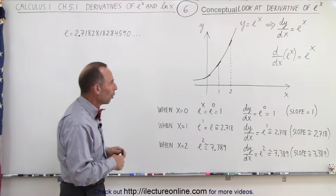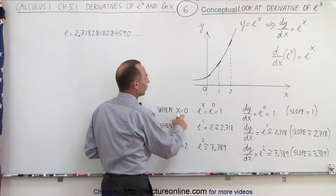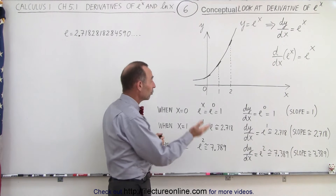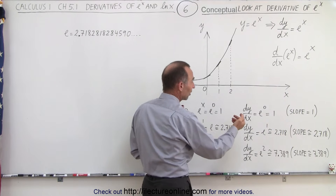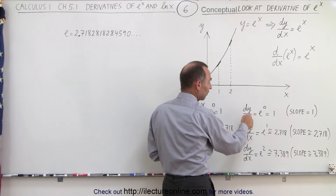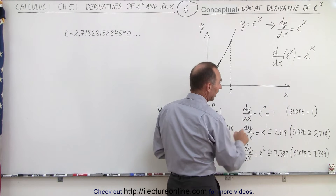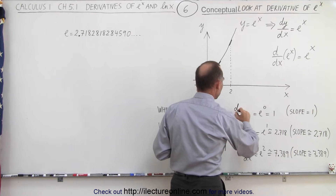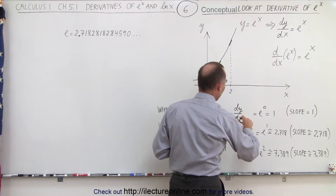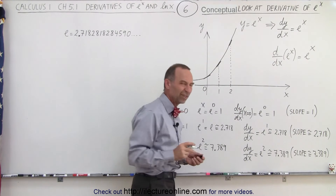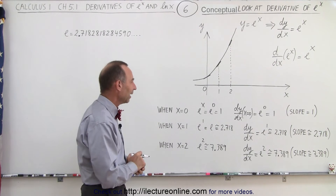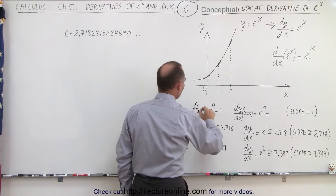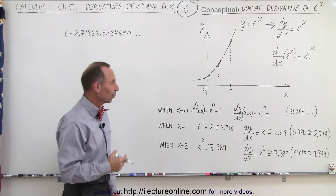Let's explore that just a little bit more. Let's say we take the function when x is equal to 0. Then e to the x becomes e to the 0, which is equal to 1. Which means that if we take the derivative of the function and plug in 0 for x, again we get e to the 0. The derivative evaluated at x equals 0 becomes equal to 1. More accurately, dy/dx when x equals 0 is e to the 0, which is equal to 1.